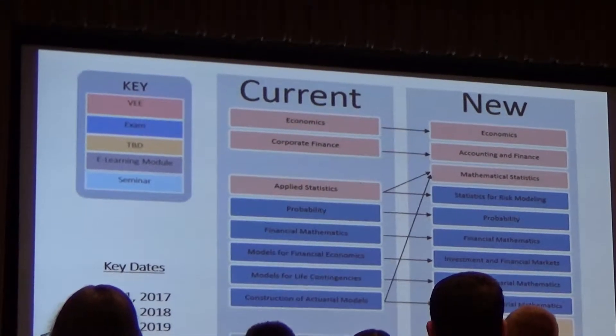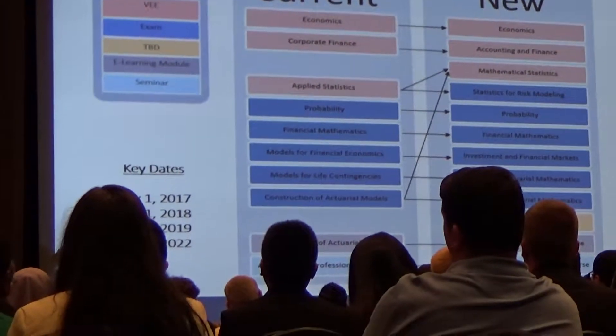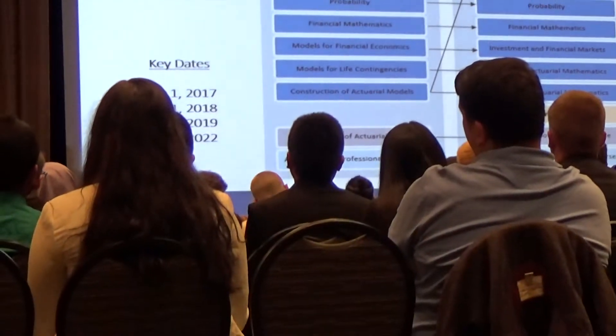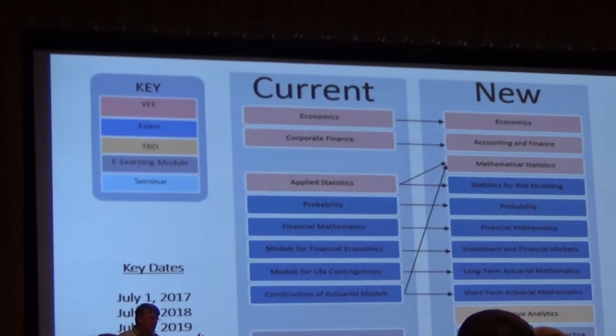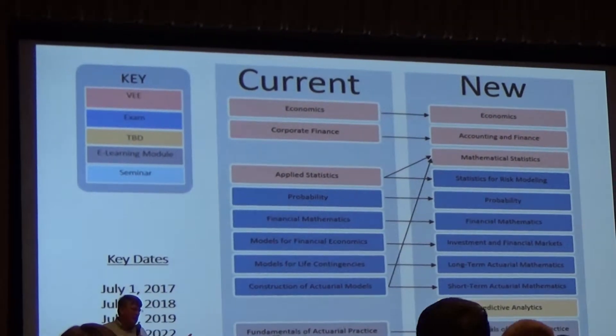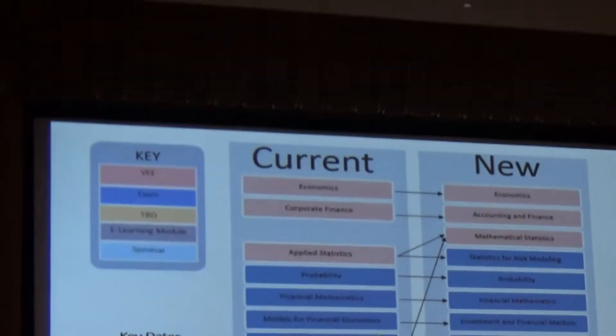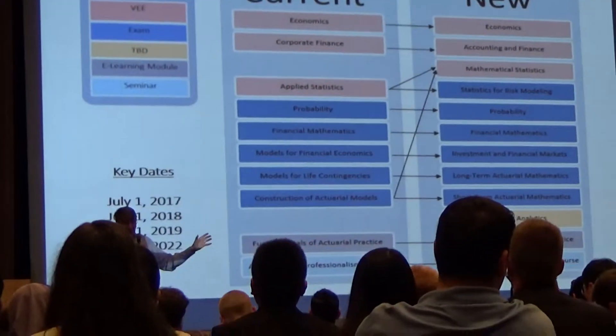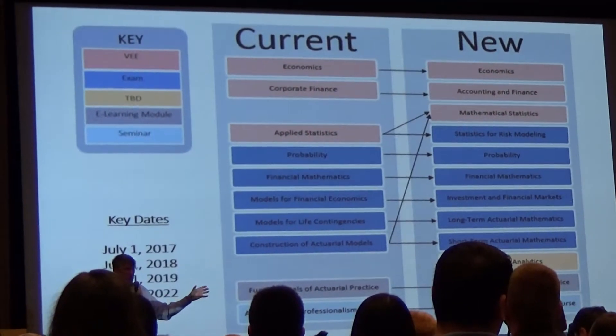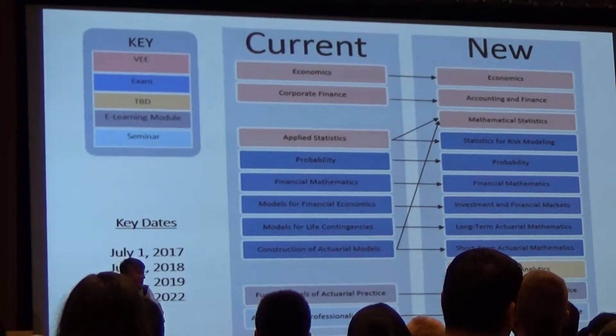Let's start with July 1, 2017 — that's pretty close. A change is being made to Exam FM, Financial Mathematics, and MFE, Models for Financial Economics. The derivatives material that's currently on FM is moving to MFE. That's the first few chapters of the McDonald textbook — that material is moving from FM to MFE.